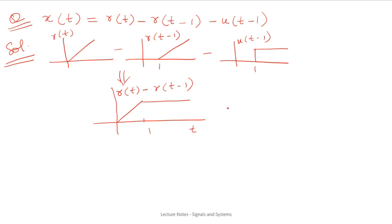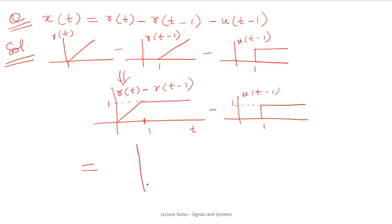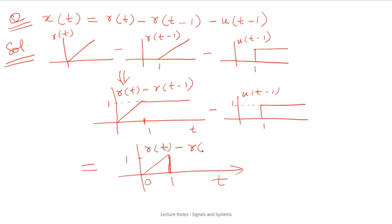The only signal being subtracted is u(t-1). After point t=1, this has amplitude 1 and u(t-1) also has amplitude 1. So 1 minus 1 equals 0 — after t=1 this signal will be 0. From 0 to 1, the ramp part is present; after t=1 it is absent. So this is a straight line from 0 to 1. This is your resultant signal.